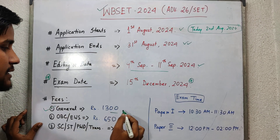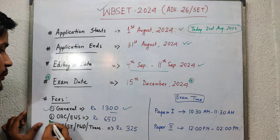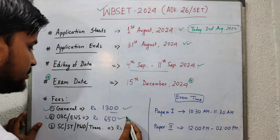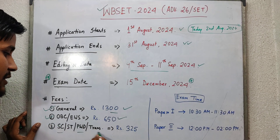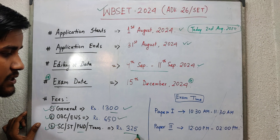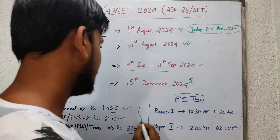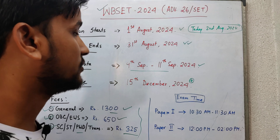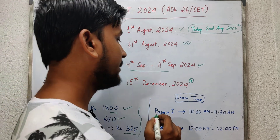Now the fees: for General category candidates it is rupees 1300. For OBC and EWS category students it is rupees 650. For SC, ST, PwD and other reserved categories it is rupees 325. This is the fees structure for West Bengal SET 2024, that is the 26th SET.